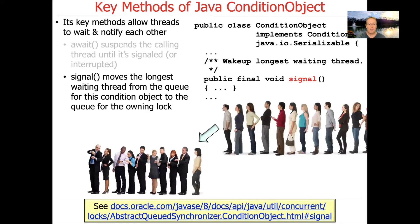Signal moves the longest-waiting thread from the queue of a given condition object to the queue for the owning lock. So it doesn't start things up right away — it simply moves the thread that has been waiting the longest from the condition object's wait set to the queue for the owning lock.